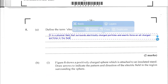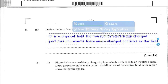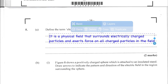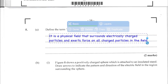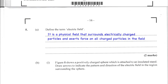Question 5A: define the term electric field. An electric field is a physical field that surrounds electrically charged particles and exerts a force on all other charged particles in the field — it is the electric force per unit charge.